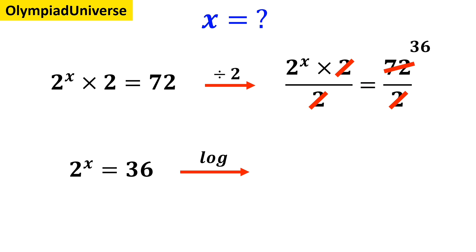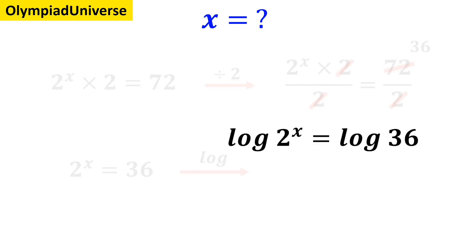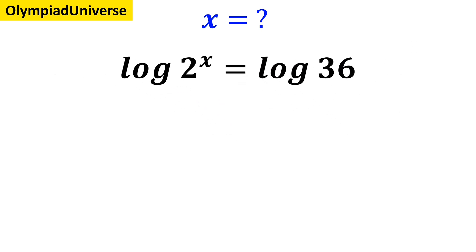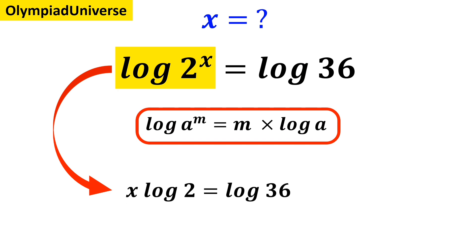Now we take the logarithm of both sides of the equation, which becomes log of 2 to the power of x is equal to log of 36. According to the rules of logarithm, log of a to the power of m is equal to m times log of a. So we can rewrite the expression — highlighted in yellow — as x times log of 2 equals log of 36.